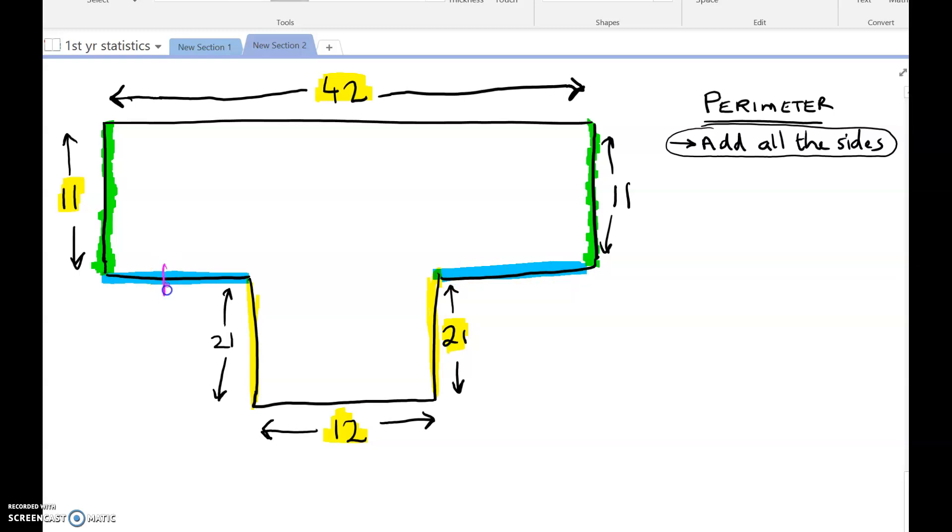Okay, we're missing those two sides. Now those two sides are the same as each other. So how can we get it? Well, just like the other questions we did yesterday, if you look up along here, all of this is 42.